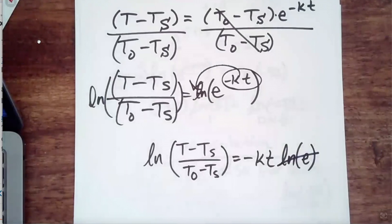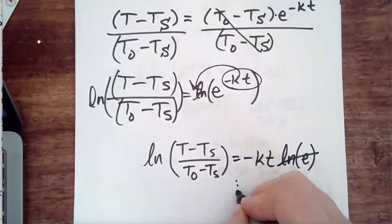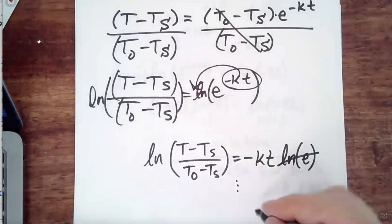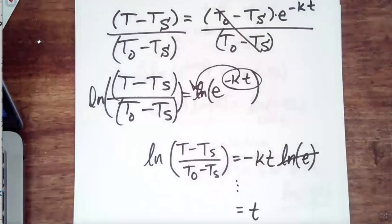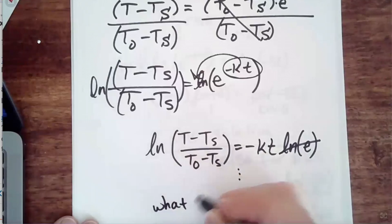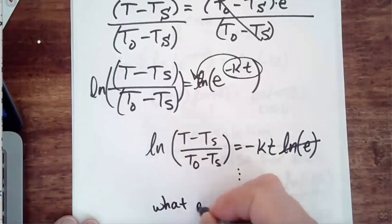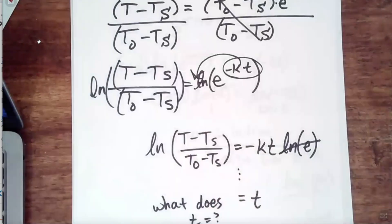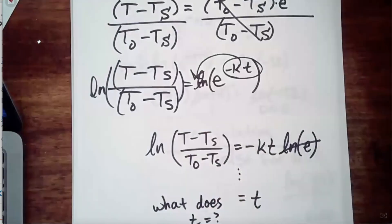Natural log of E goes away. You're literally one step away from what T equals, so you get to go find out what T equals — one last step. That's number one. I left you with one step left.